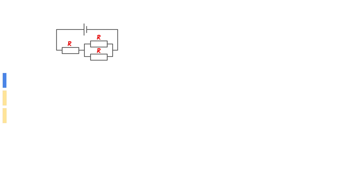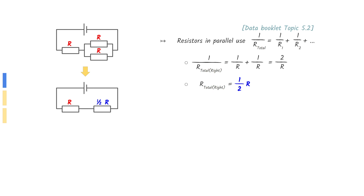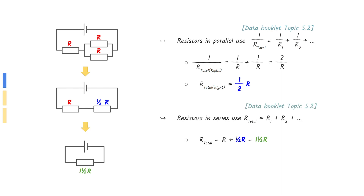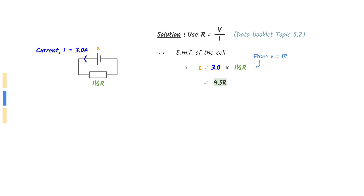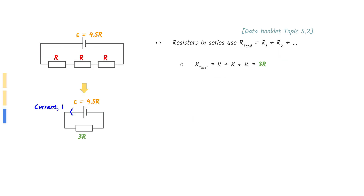We need to know the EMF of the cell in order to solve this question. First, find the total resistance of the circuits shown in the question. All resistors have resistance R since they are identical. The two resistors in parallel on the right can be treated as a single resistor using the equation from the data booklet. Then determine the total resistance of the two resistors in series. EMF can be found by multiplying the current with the total resistance — the EMF of the cell is found to be 4.5R. Now arrange the three resistors in series with the same cell, use the series equation to find total resistance, then divide the EMF by the new total resistance to find the current.